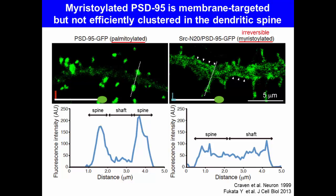This shows the localization of myristoylated PSD95, in which the palmitoylation motif of PSD95 is replaced with the myristoylation motif of Src. Interestingly, irreversibly myristoylated PSD95 is diffusely targeted to the plasma membrane, but is not efficiently clustered in the dendritic spine. This contrasts strikingly with the efficient clustering of palmitoylated PSD95.